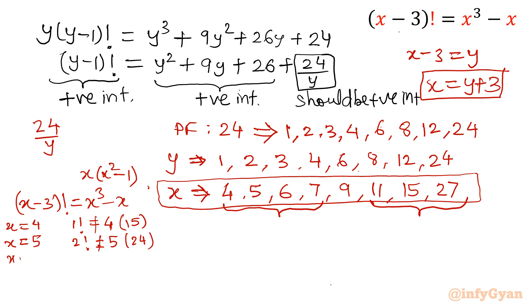For x equal to 6: 3! = 6, but 6(36 - 1) = 6(35) = 210. Not possible. x equals 7: 4! = 24, but 7(49 - 1) = 7(48) = 336. It is not possible.